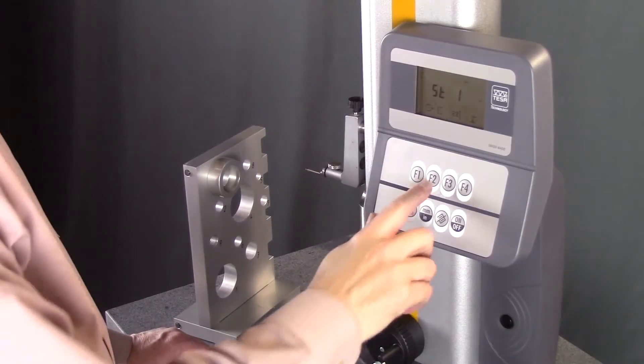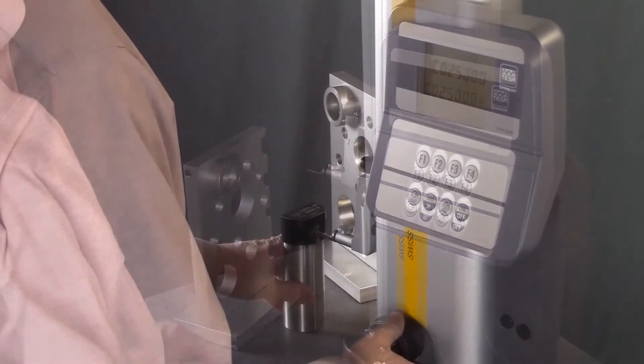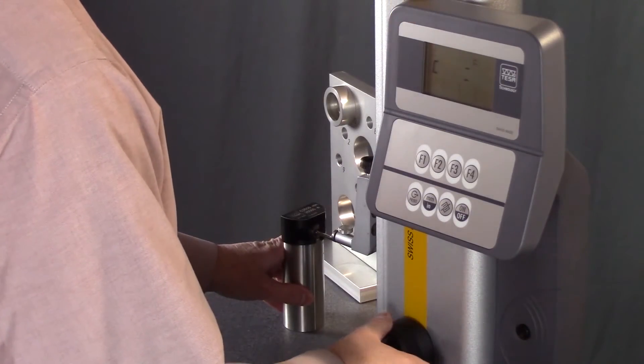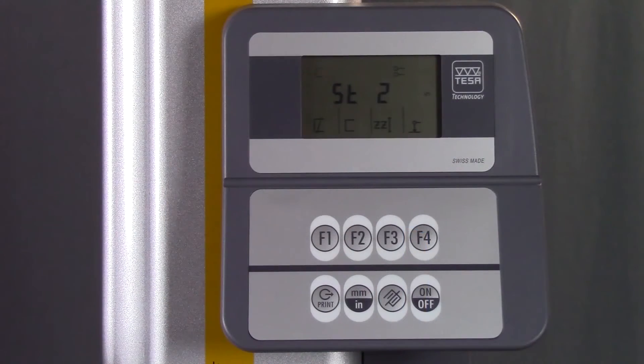If you set up your gauge in start two mode, you can measure in two directions. That is, you can take measurements using both the top and bottom of the probe.